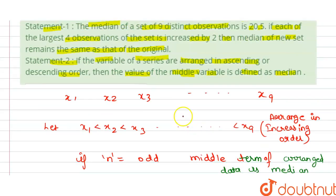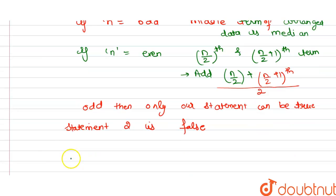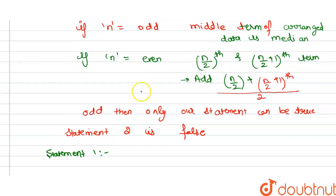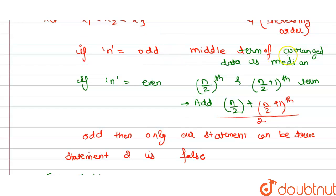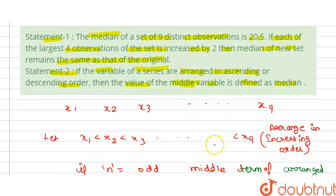Now we check Statement 1. It is given that the median of 9 distinct observations is 20.5. If the data is odd, the middle term is the median, so we can write: x₁, x₂, x₃, x₄, x₅, x₆, x₇, x₈, x₉. So x₅ = 20.5.